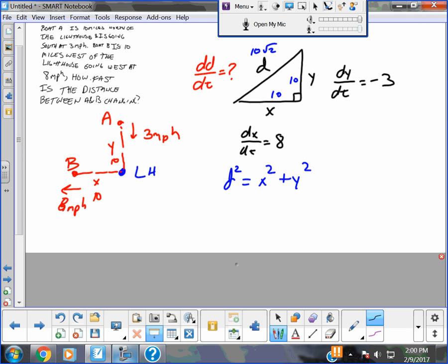Okay? So I think I get 2D, and I took it with respect to D, equals 2X, and I took it with respect to X, plus 2Y, and I took it with respect to Y.